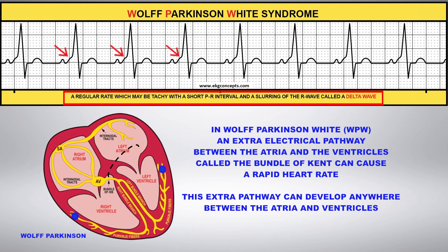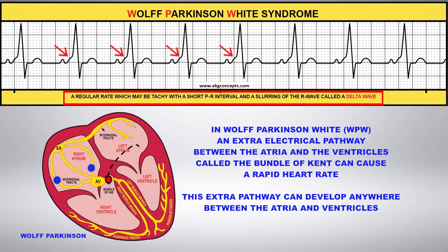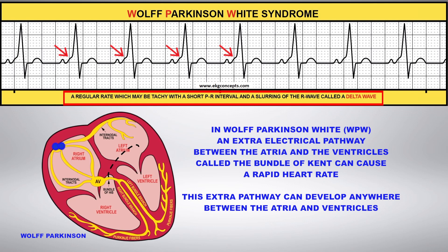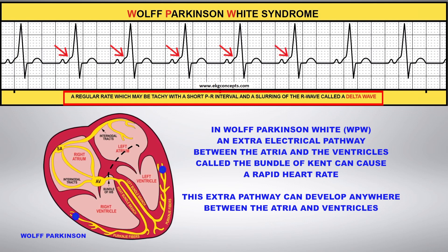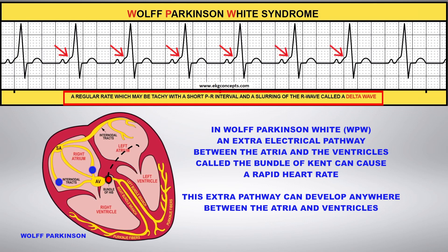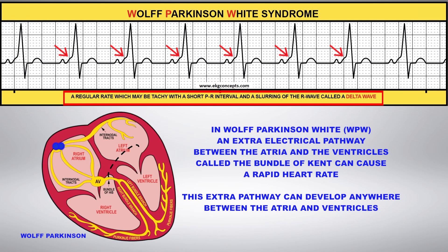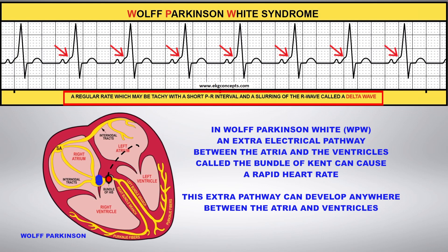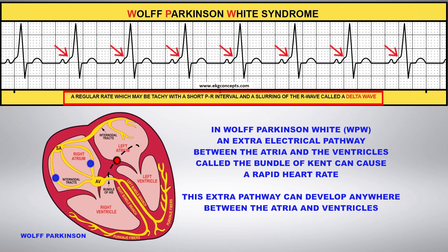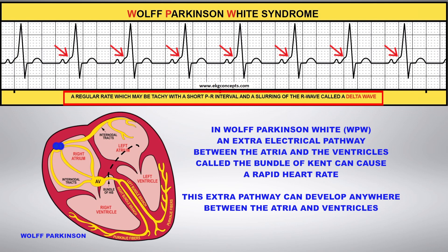This is represented by the slurring of the P wave called the delta wave, as illustrated by the red arrow. The delta wave is formed because the ventricles are depolarized through the accessory pathway before the normal conduction can reach the ventricles.